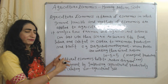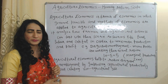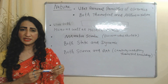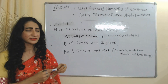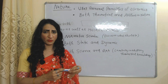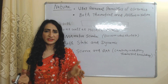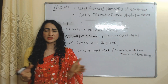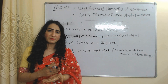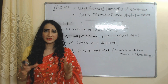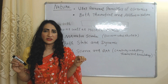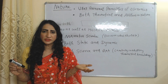Now we'll see the nature of agricultural economics. First, it uses the general principles of economics. For example, the law of variable proportions is a general principle of economics, and agricultural economics uses this principle to analyze the agriculture sector.